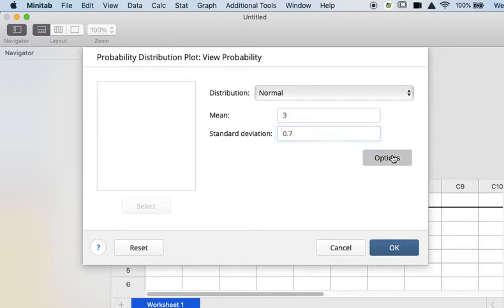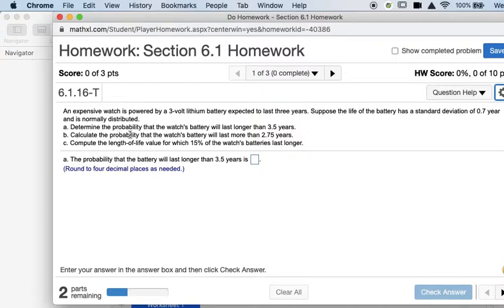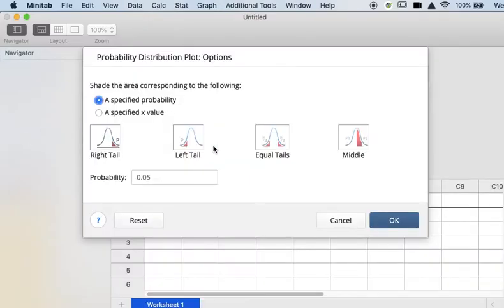Then I'm going to click on Options. Now, the first problem is asking me to determine the probability that the battery will last longer than 3.5 years. So 3.5 is going to be the X value and I'm looking for the right tail because I want to know the probability of lasting longer than 3.5 years.